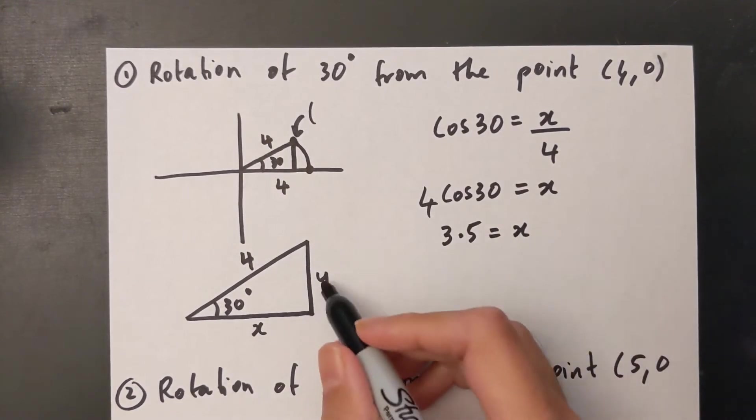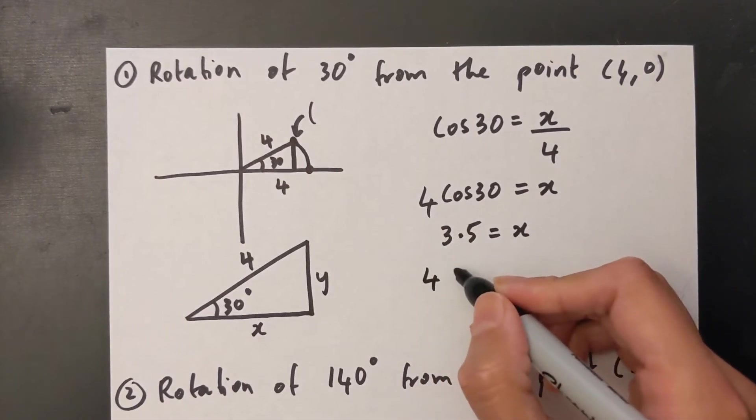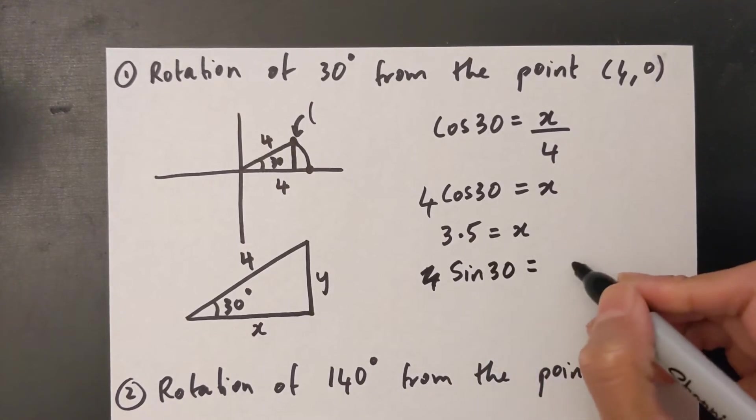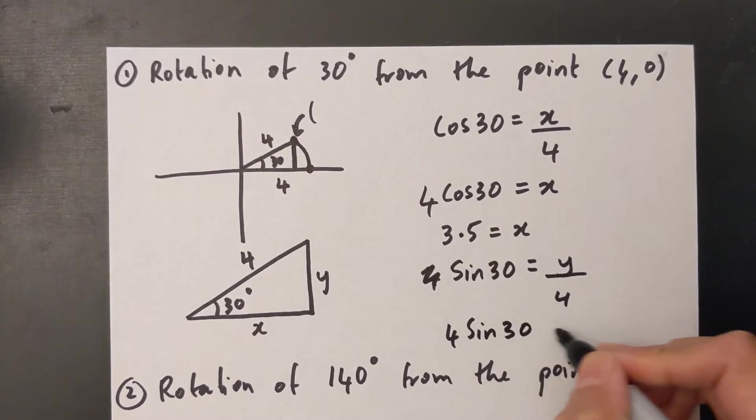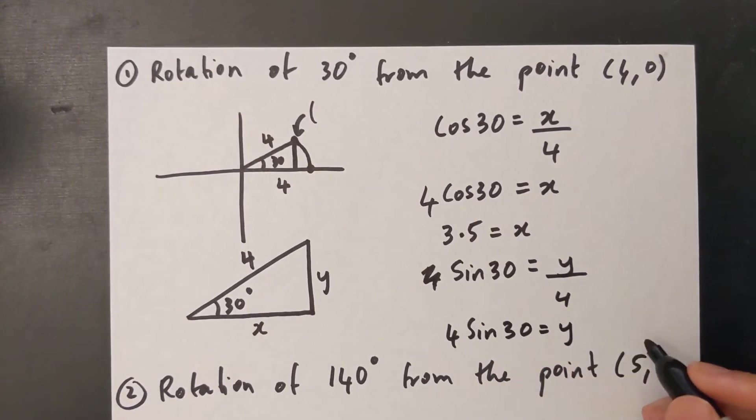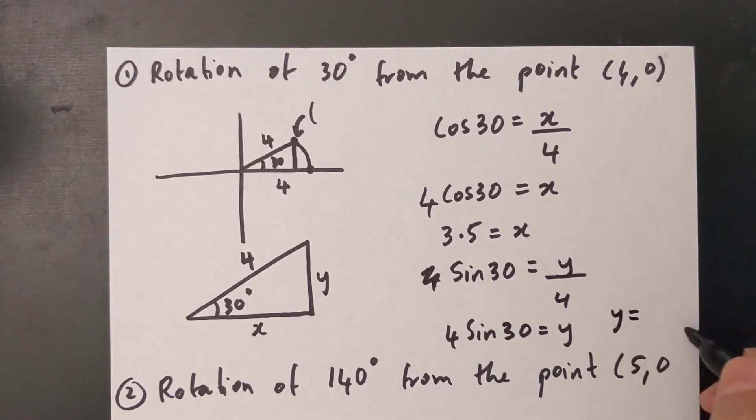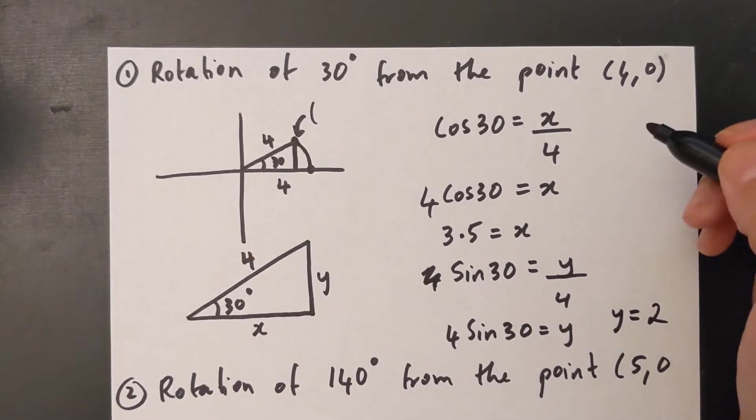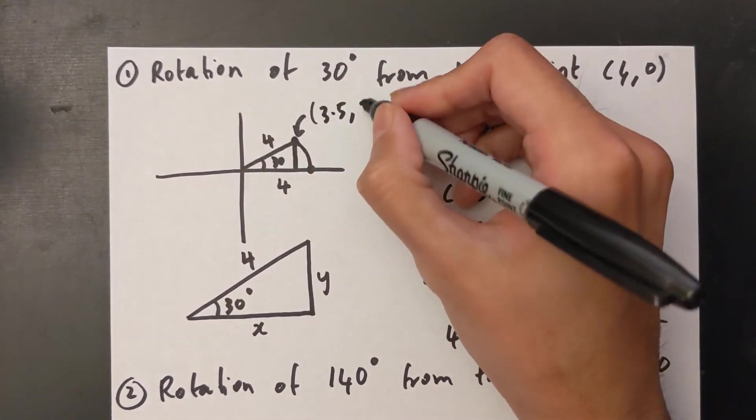So the same for Y. If I'm solving for Y, I need to use sin. So sin 30° equals Y over 4. 4 sin 30° equals Y, and if I put that in my calculator I get Y equals 2. So I know that the X value of this coordinate is 3.5 and the Y value is 2.